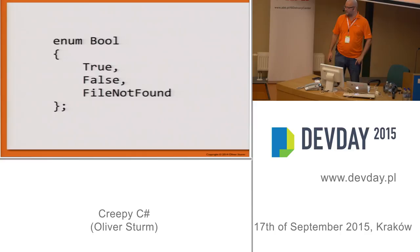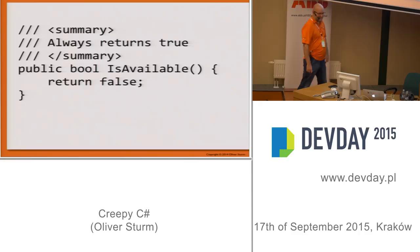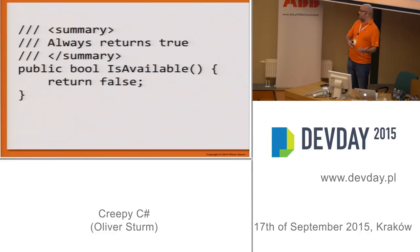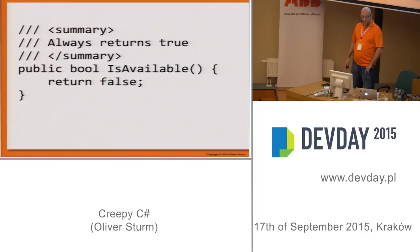We also have method implementations like this: 'IsAvailableFree' always returns true. That's where we get into commenting too — how would you have known otherwise? That's why comments are important.